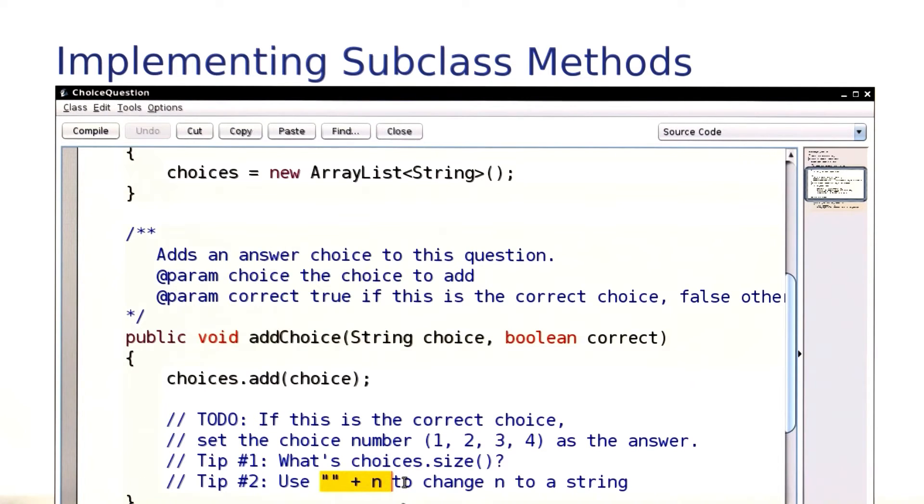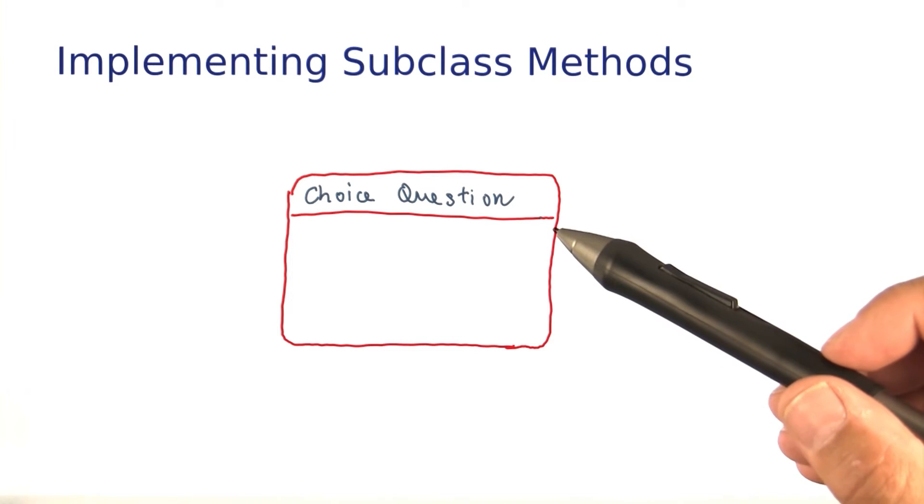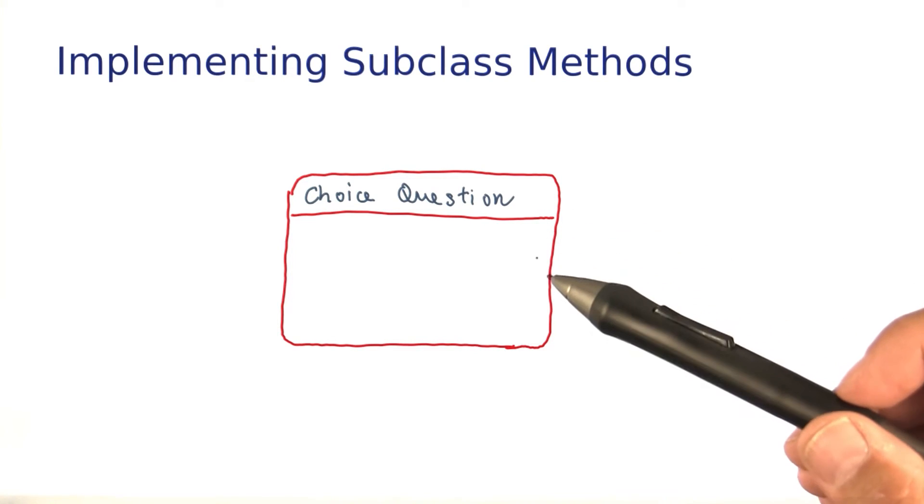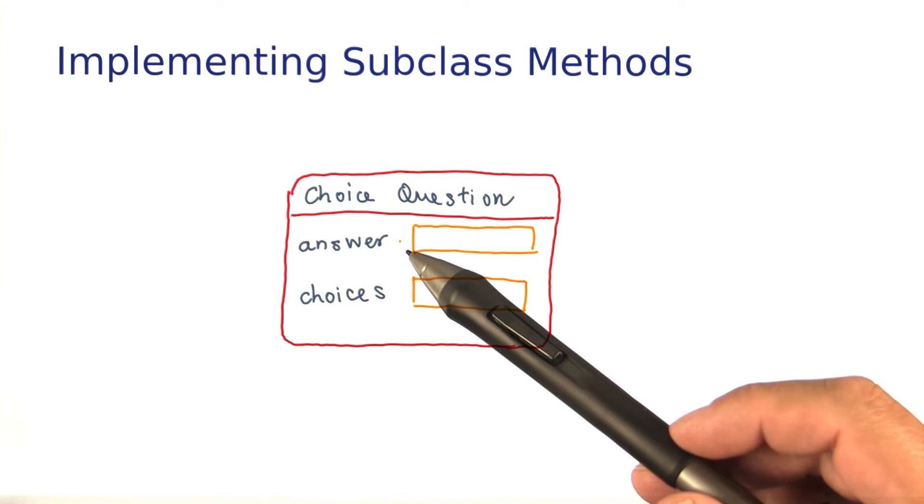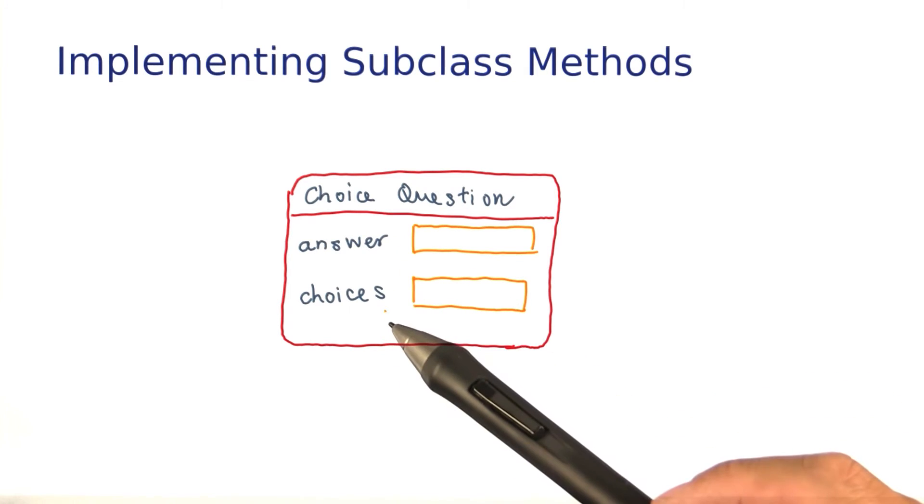And now you're going to have a bit of a challenge. When you have a choice question object, it has two instance variables: the correct answer, which is inherited from the question superclass, and the list of choices.